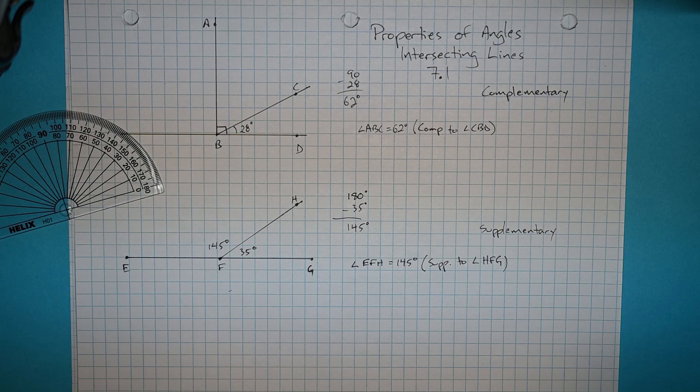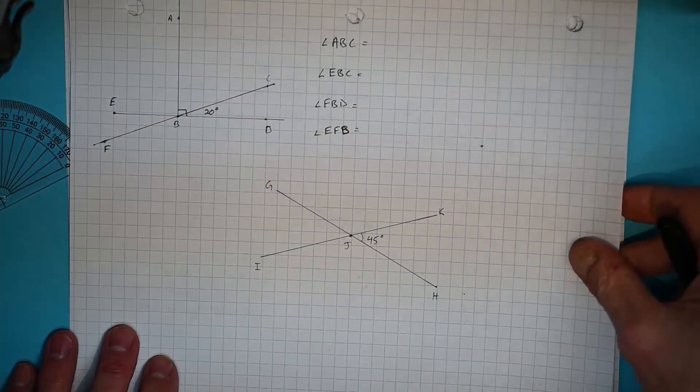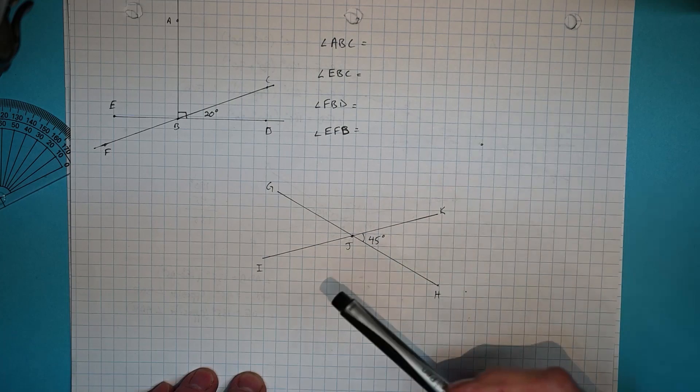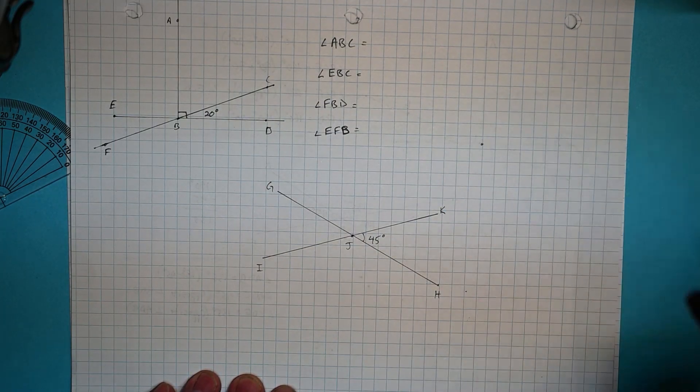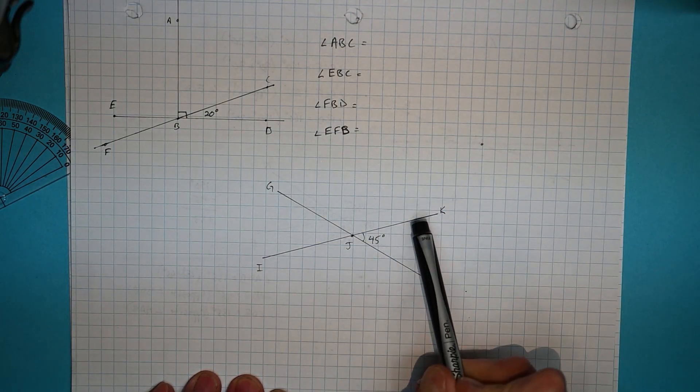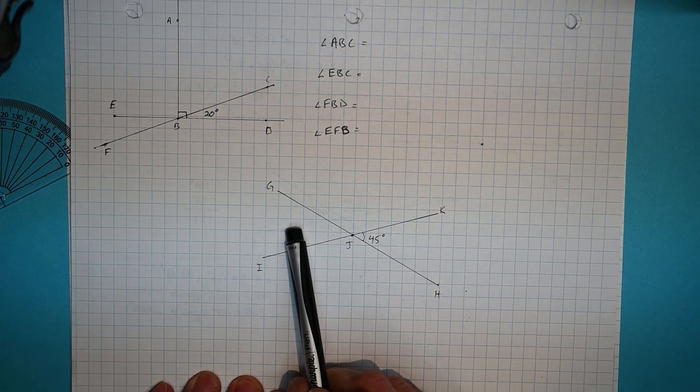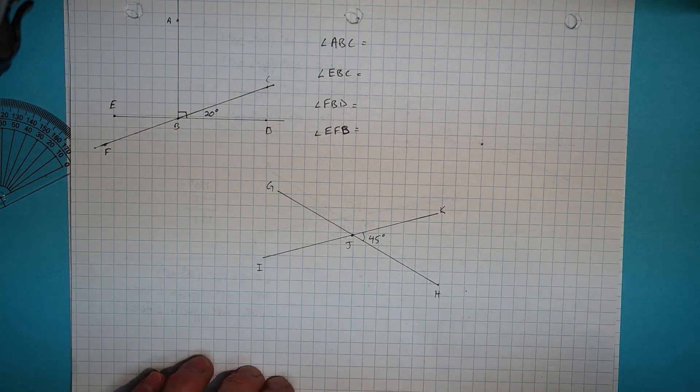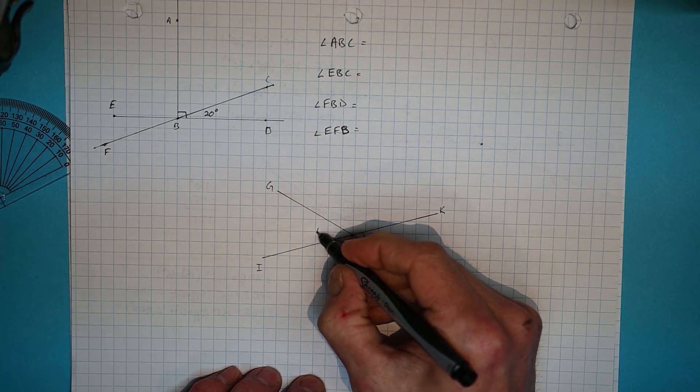So I have a situation here where we have two intersecting lines. And looking at this, you can probably see right away that this side must also be 45 degrees. And you'd be absolutely right. It is 45 degrees.